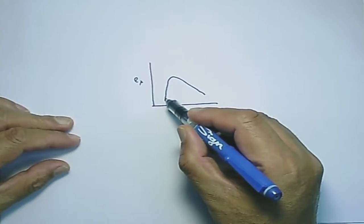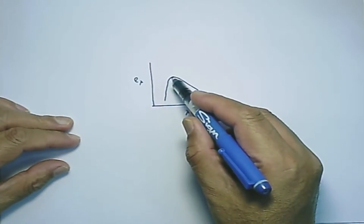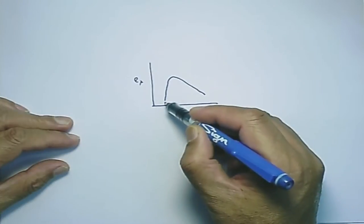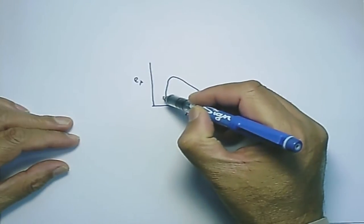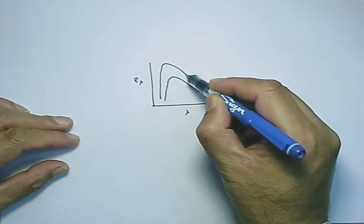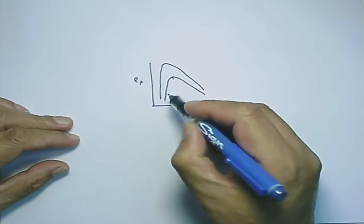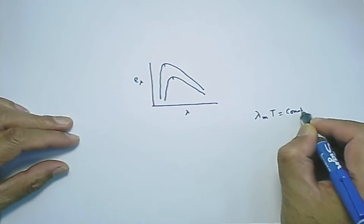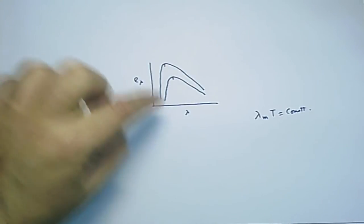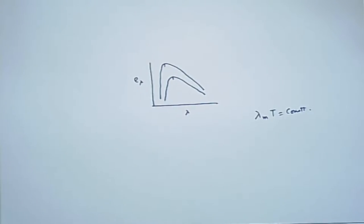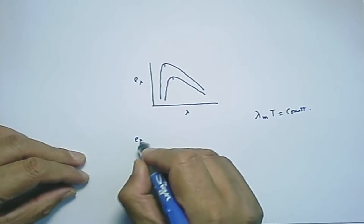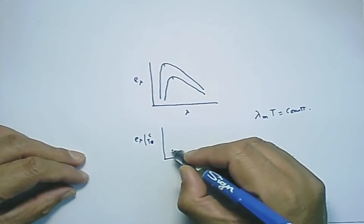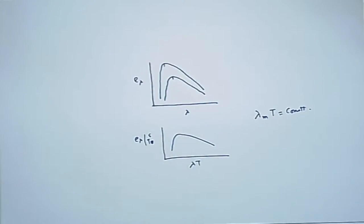If we take the total emissive power as a function of lambda, we see emission is lower at small wavelengths, increases to a maximum at a particular lambda, then decreases again. This curve also depends on temperature — increasing temperature shifts the curve. However, if we plot e_λ/T^5 as a function of λT, all these curves for different temperatures can be merged into a single curve.